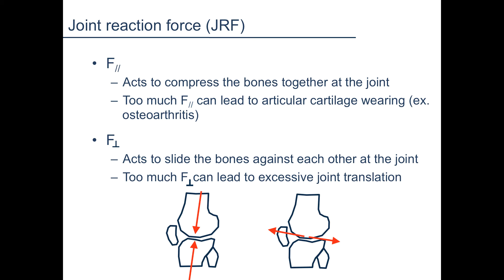While the total joint reaction force tells us how much force is acting on the proximal end of the leg, it is meaningful to look at the parallel and perpendicular components separately because they have different effects at the joint. The parallel component of the joint reaction force acts to compress the bones together at the joint — in this case, representing how hard the femur is compressing into the tibia. Too much of this force can lead to wearing out of the articular cartilage between the femur and tibia. The perpendicular component pushes or pulls the bones to slide against each other, causing the tibia to slide backward on the femur. Too much force in this perpendicular direction can lead to excessive joint translation and instability.